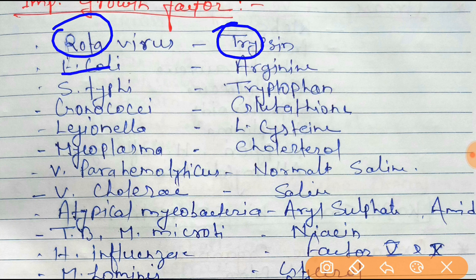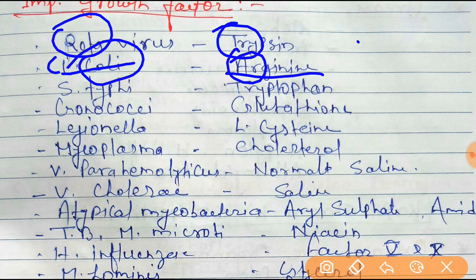Next one is E. coli. The growth factor for E. coli is arginine. You can remember it by the mnemonic 'Cooli-R' — E. coli requires arginine.